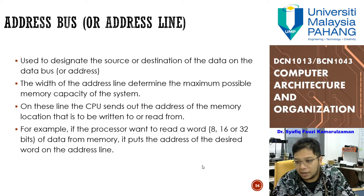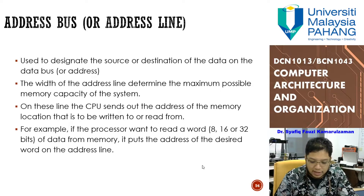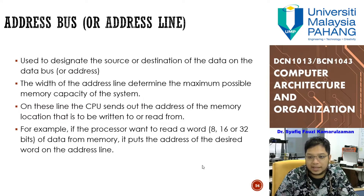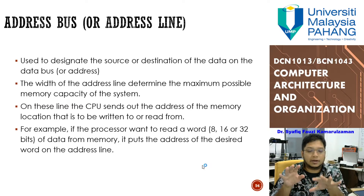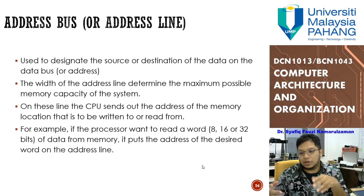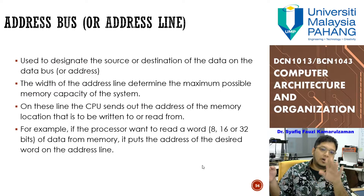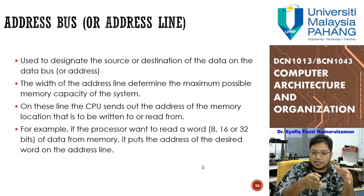The address bus carries data as well, but this data represents the location of the real data you need within memory. When the CPU wants to look inside main memory it needs to use addresses, and based on those addresses the CPU will request data from that location. The number of address bits and data bits need to be balanced. For example, with a 32-bit bus, if 8 bits are allocated for address you have 24 bits for data — fewer addresses means fewer accessible locations.